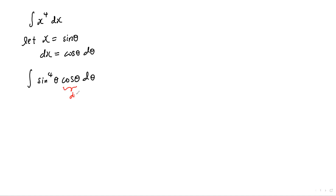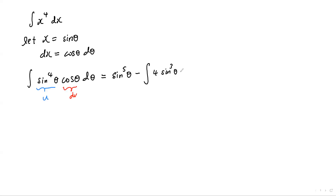In this case I'm going to let cosine theta be dv, and sine to the power 4 theta be u. So I'm applying integration by parts after the substitution. This gives us u times v, which is sine to the power 5 theta, minus the integral of v du.